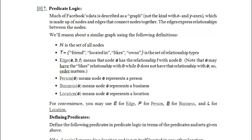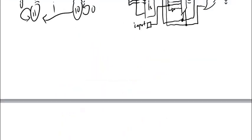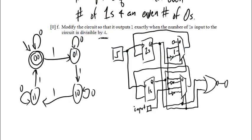Much of Facebook's data is described as a graph — not the kind with x and y axes. This is actually a data structure in computer science, a way of organizing data, and it's really common now, especially with the amount of data out there, like Facebook's, that's easy to represent with a graph. A graph is made up of nodes and edges that connect nodes together, and the edges express relationships between the nodes. You've seen a bunch of graphs if you've watched the previous screencasts, or if you've worked with DFAs — nodes with edges connecting them. So this is a graph of a particular type.